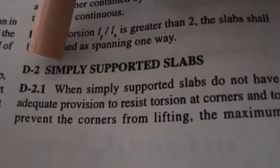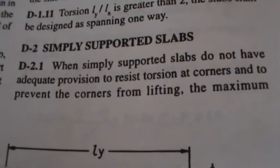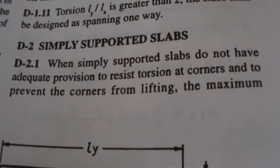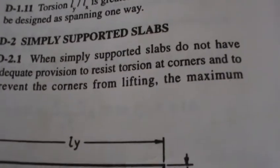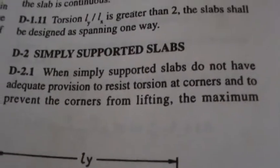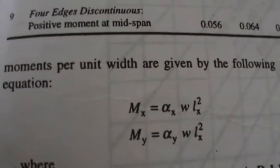It is D2, simply supported slabs. I will read: When simply supported slabs do not have adequate provision to resist torsion at corners and to prevent the corners from lifting, the maximum, now come to page number 91, maximum moments per unit width are given by the following equations.